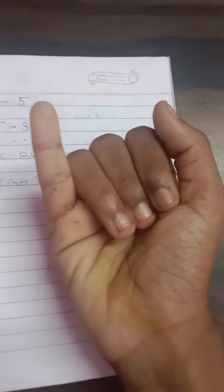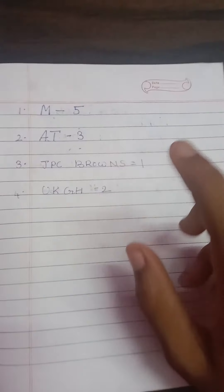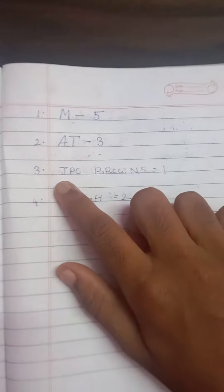Now for A: Andhra Pradesh, Arunachal Pradesh, Assam. T: Telangana, Tamil Nadu, Tripura. Now for the single letter states: J is for Jharkhand, P...